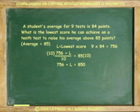Solving for L: Multiply both sides by 10. Subtract 756 from both sides. L is greater than 94. This means the lowest score must be 95. Any score greater than 94 will raise the average above 85 points.